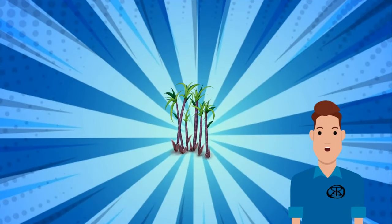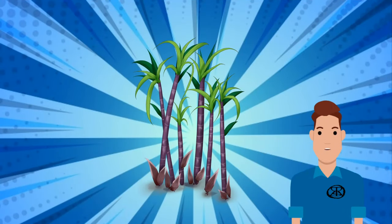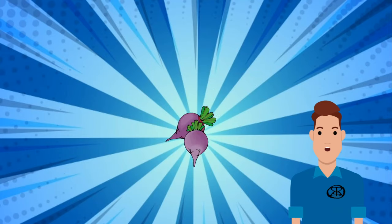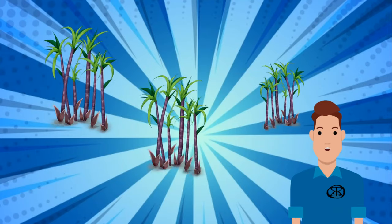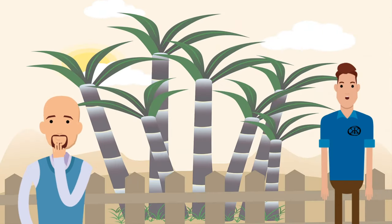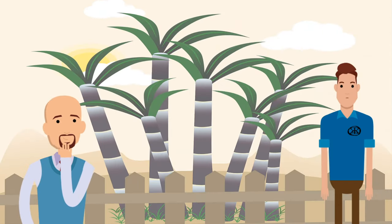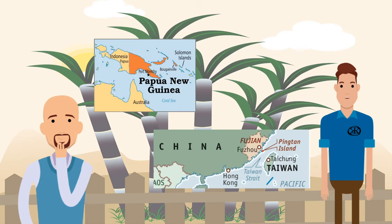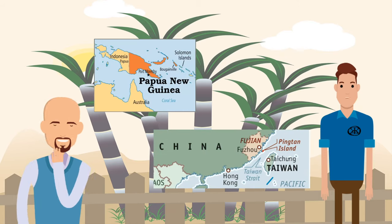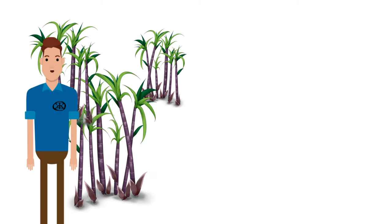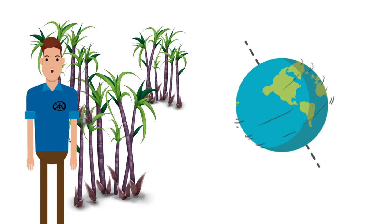Most rums start with the sugarcane. There are some rums made from sugar beets, however since there are so few of them, we'll just concentrate on the sugarcane. Sugarcane is a member of the grass family and seems to have its origins in Papua New Guinea and the area around Taiwan and southern China. Since it's such a hardy plant, nowadays it is grown in tropical climates all around the world.